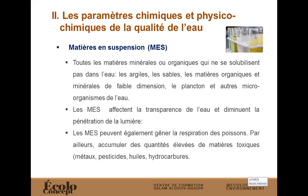Les matières en suspension peuvent également gêner la respiration des poissons s'il s'agit d'une rivière ou de la mer, si on rejette directement cette eau sans traitement, sans décantation, sans traitement chimique de coagulation/floculation pour enlever ces matières en suspension. Ça va causer une gêne de respiration des poissons, accumuler des quantités de matières toxiques : les métaux, les pesticides, les hydrocarbures et ainsi de suite. C'est donc un paramètre qu'il faut contrôler.